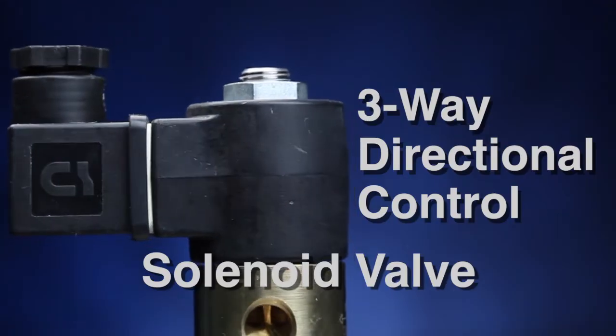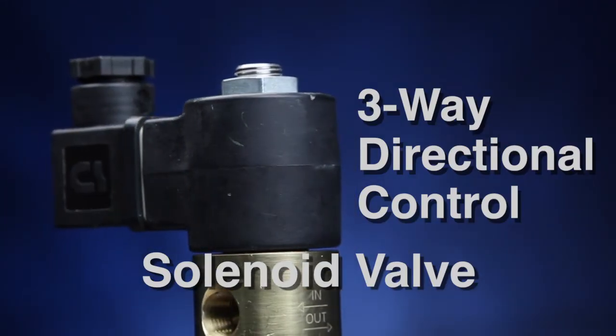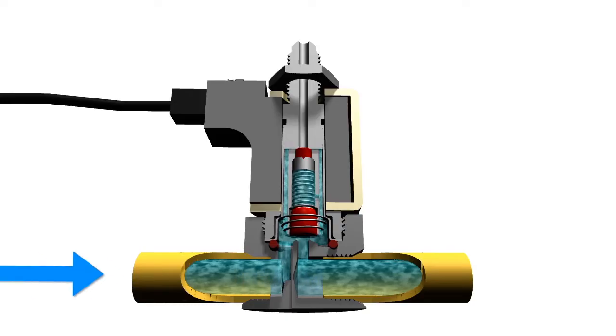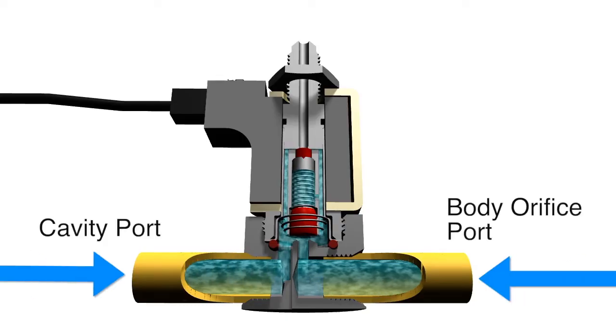A three-way directional control solenoid valve has three pipe connections: the cavity port, the body orifice port, and the stop port.